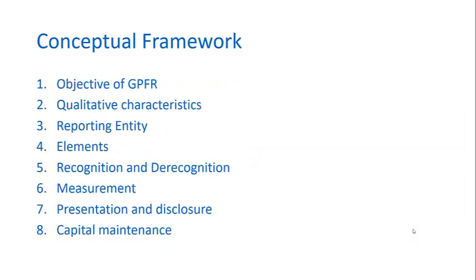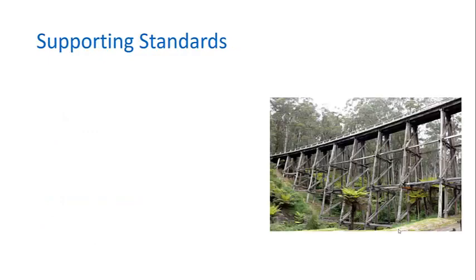To date, our conceptual framework project contains eight chapters. They start with the objective of financial reporting, which is very well developed, and also contain other chapters such as chapter three on the reporting entity, which is considerably less well developed. The important thing to appreciate about this framework is it does very much define why we have financial reporting, what are the characteristics of financial reports, and what goes into them. Supporting the conceptual framework are another set of accounting standards — I call them supporting standards because they flesh out some of the detail that's not in the framework.